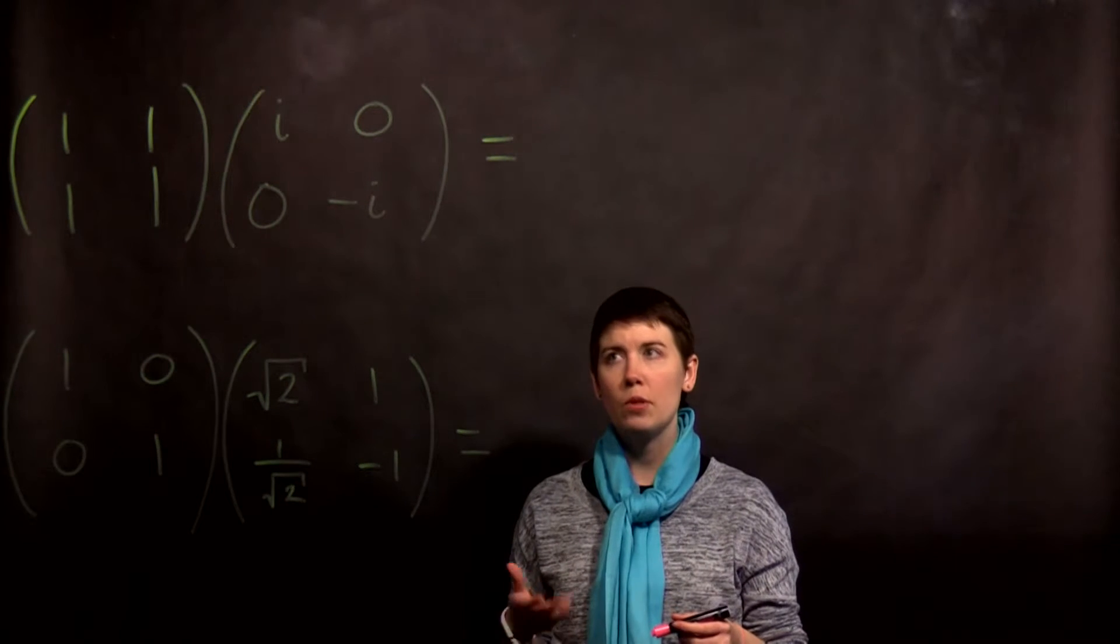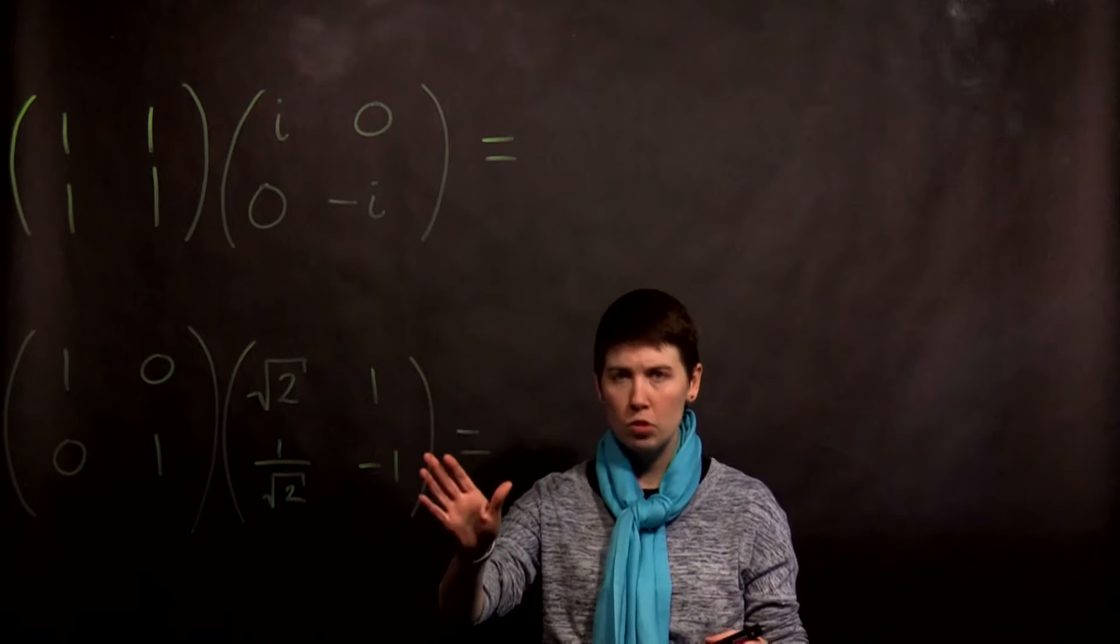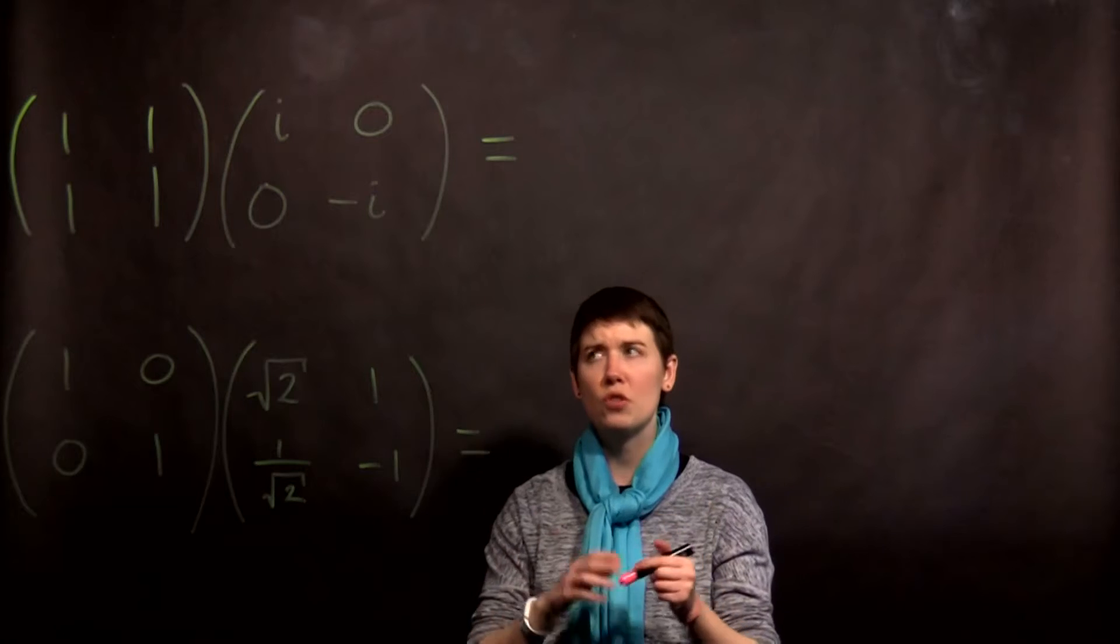I'm going to go through two examples of multiplying matrices. So this is pretty simple. Two by two matrices multiplied together. This is just practice.